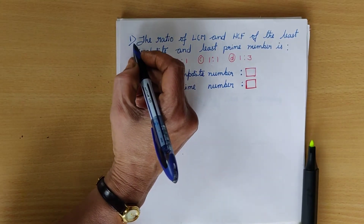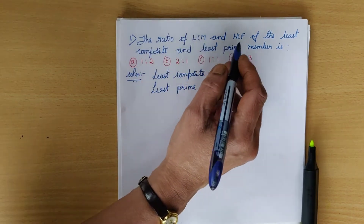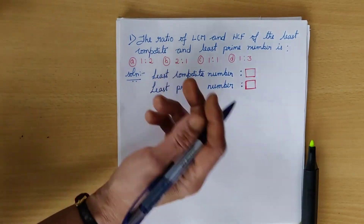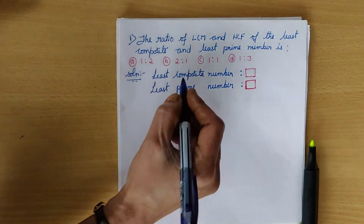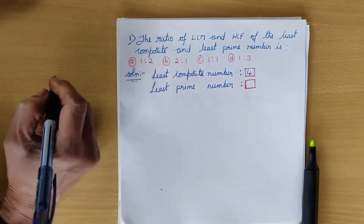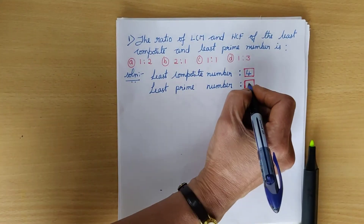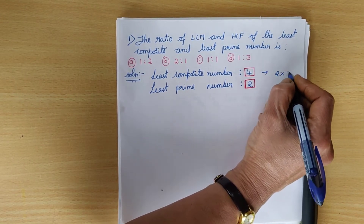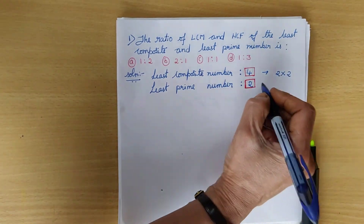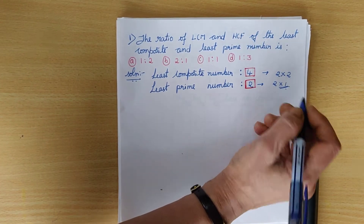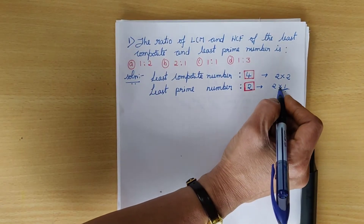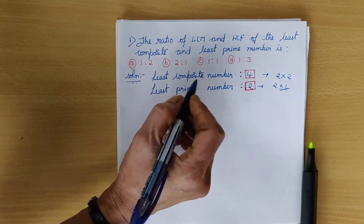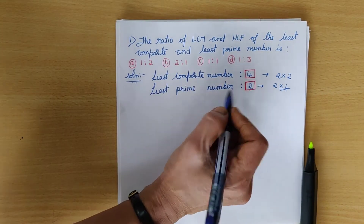The first question: the ratio of LCM to HCF of the least composite and least prime number is. We know that the least composite number is 4 and the least prime number is 2. A composite number can be written as a product of prime factors, while a prime number has only itself and one as factors.